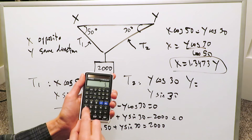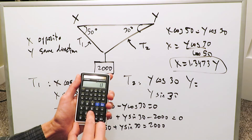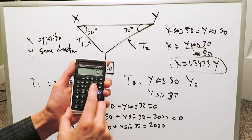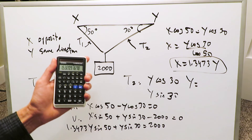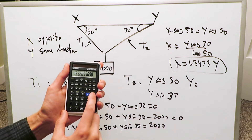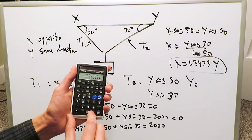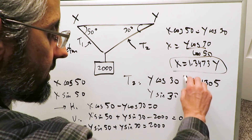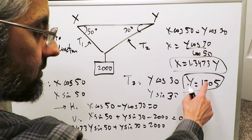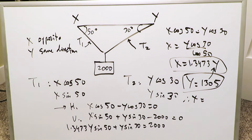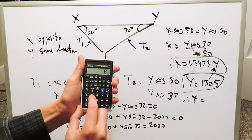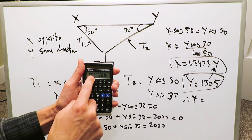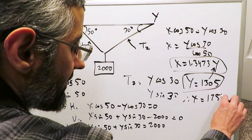This is all calculator work. We compute sine 50 multiplied by 1.3473, then add sine 30, giving us 1.532y equals 2000. Dividing 2000 by 1.532 gives y equals 1305. Then x equals 1305 times 1.3473, which gives 1758.7 — rounded up to 1759.